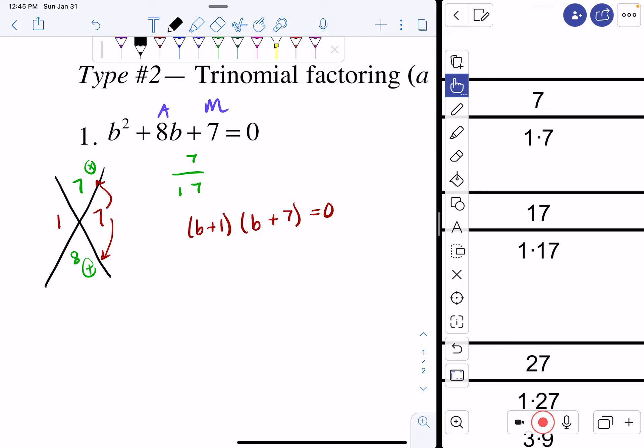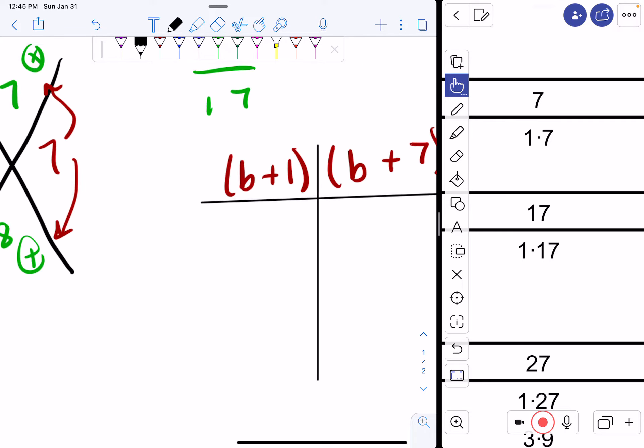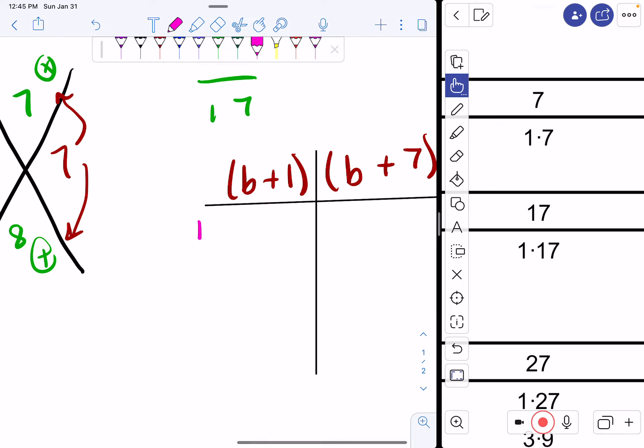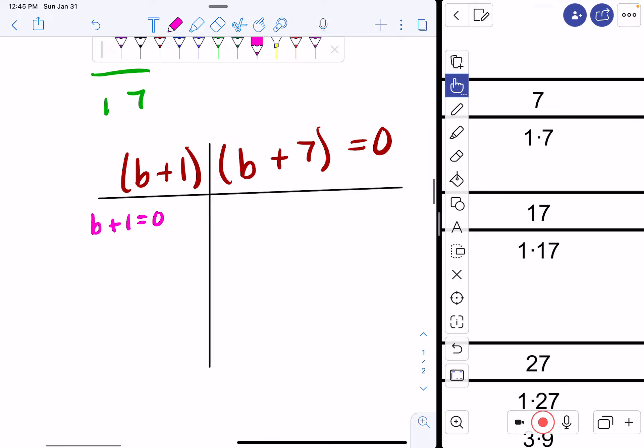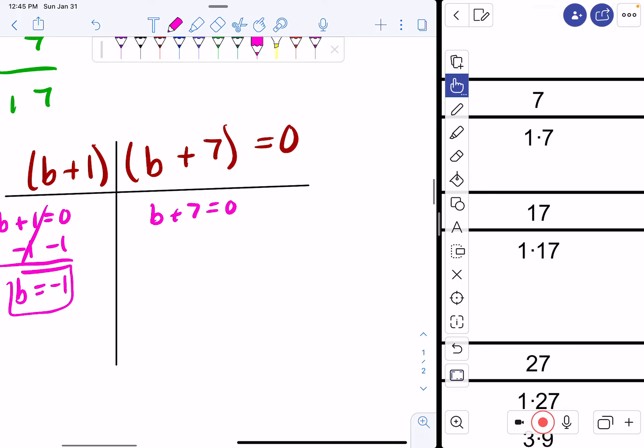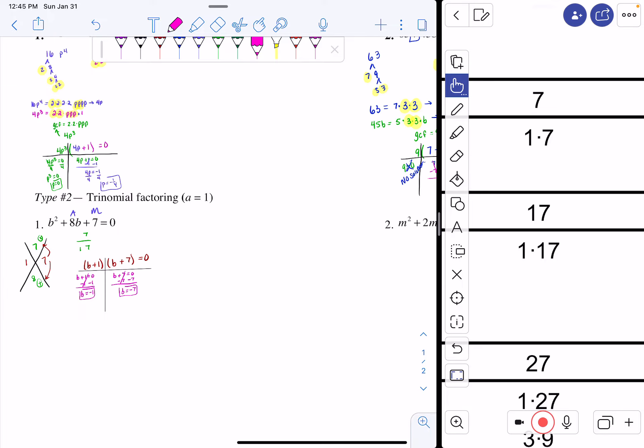And that's equal to 0. Here's where we do t-time. We put a t in between our factors. And now we have b plus 1 equal to 0 and b plus 7 equal to 0. We have two one-step equations. I get rid of my plus 1 by subtracting 1. So I get b equals negative 1. I get rid of my plus 7 by subtracting 7. So I get b equals negative 7. And that's your final answer.